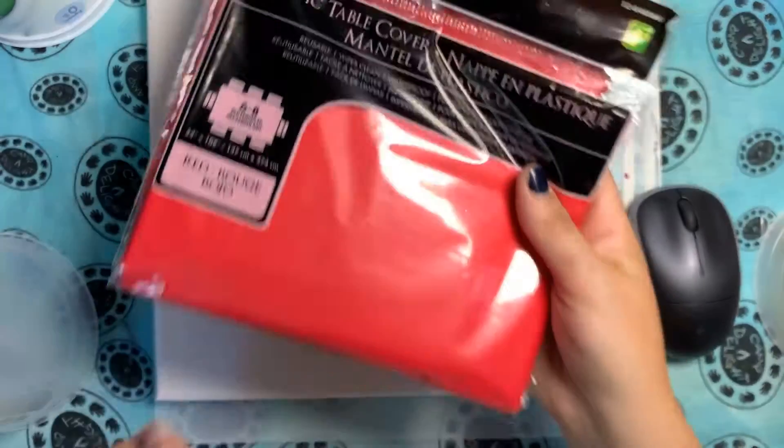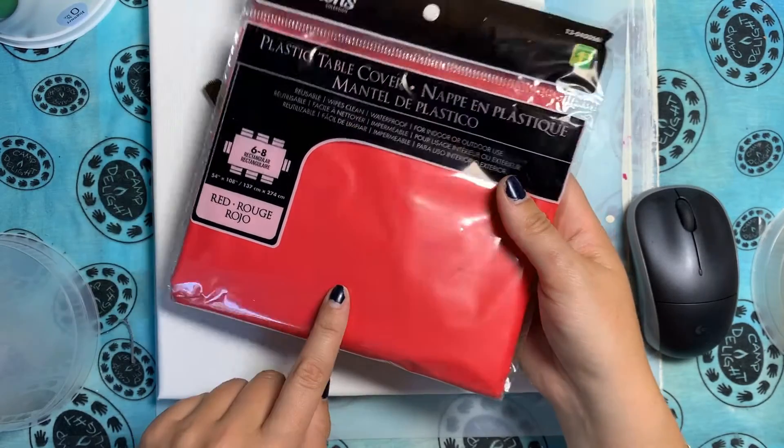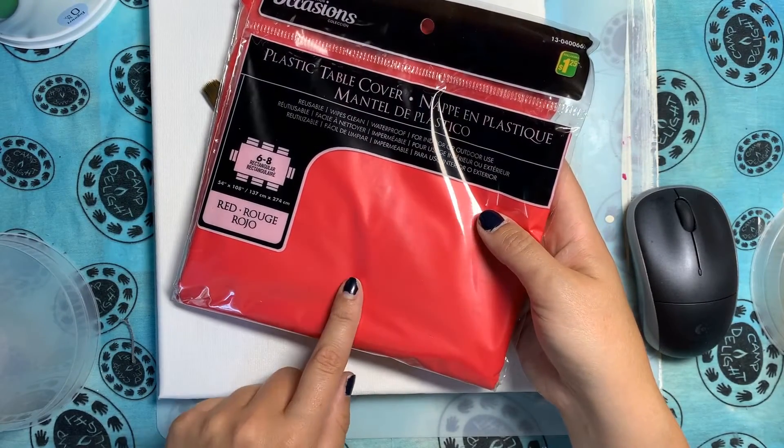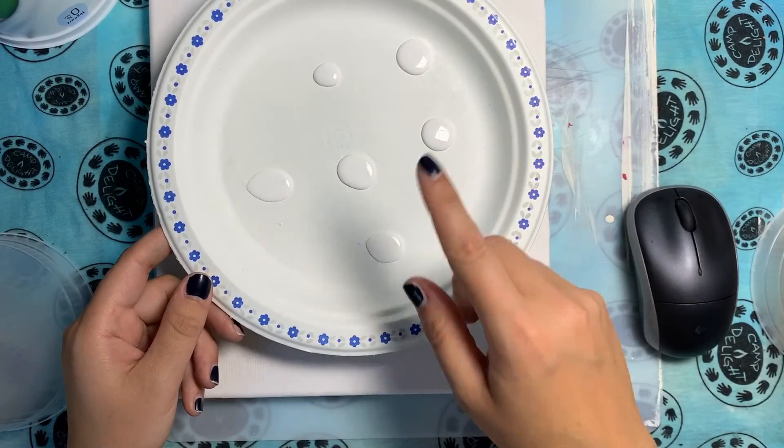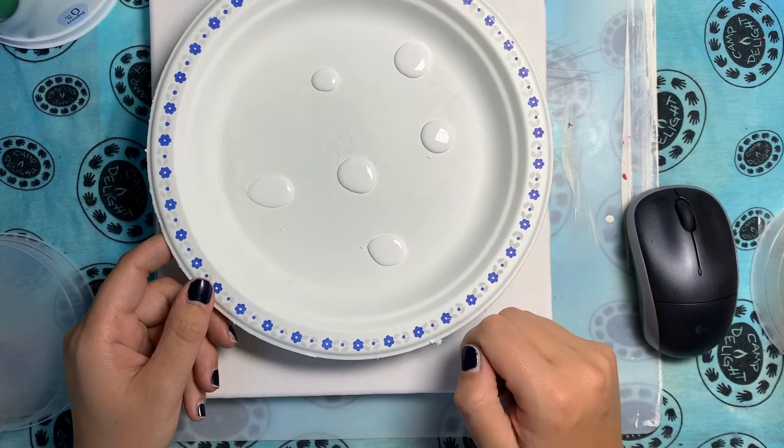You want to grab your tablecloth just to cover your work area to make sure that you don't make a mess on your table, and then you need the multiple shades of white paint that comes in your kit.